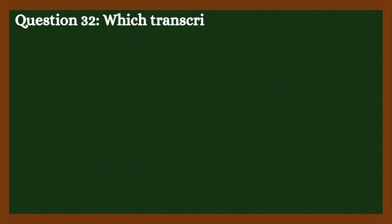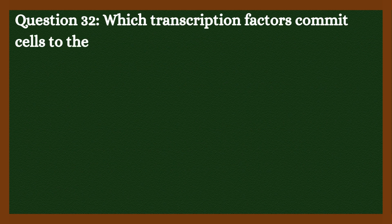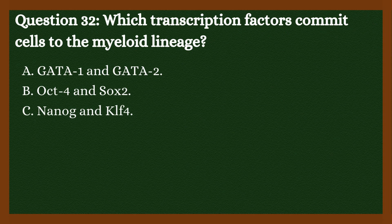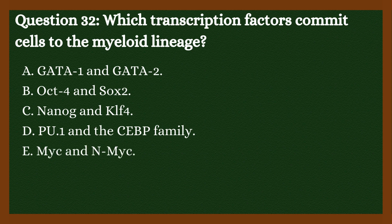Question 32: Which transcription factors commit cells to the myeloid lineage? A. GATA-1 and GATA-2. B. Oct-4 and SOX-2. C. Nanog and KLF-4. D. PU.1 and the CBP family. E. MIC and NMIC. Answer is D. PU.1 and the CBP family.